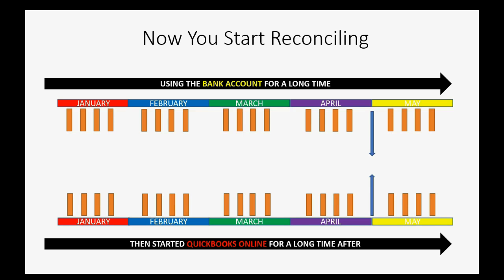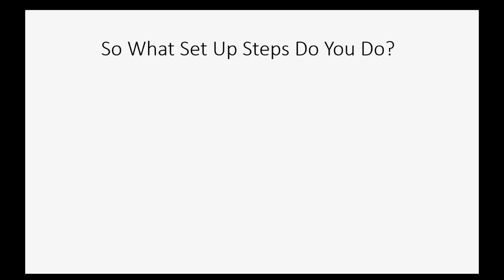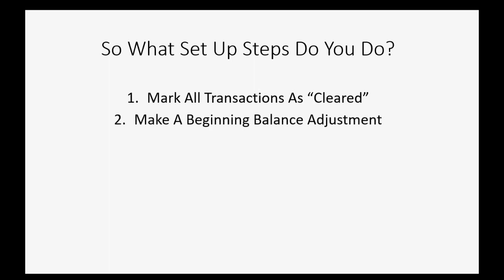In this example, let's imagine you start reconciling at the end of April, because you want May to be perfect. So what steps do you take in a case like this? It's very simple — you only do two specific steps. First, you mark all transactions as cleared. Then, when you finish doing your reconciliation, you make a beginning balance adjustment. Both of these steps take just seconds, whether you're using QuickBooks Online or QuickBooks Desktop.